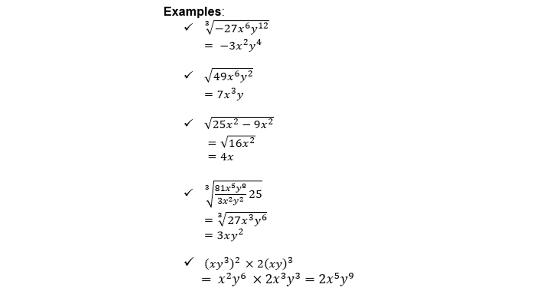Similarly, you can also divide the 12 by 3 to get 4. For the square root, 49 gives you 7, and x to the power 6 — just divide the 6 by 2 to get x cubed. Then for y, divide the exponent 2 by 2 to get y.